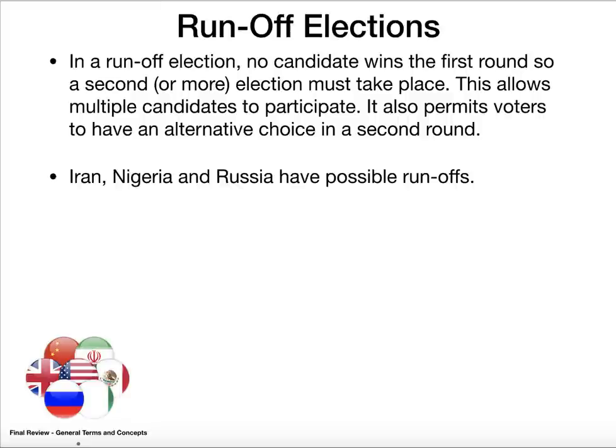A runoff election: some countries — Iran, Nigeria, and Russia — allow the president to be elected in a possible second round of voting. In Iran and Russia, if you do not receive 51% of the vote, there will be a second round. In Nigeria it's a bit trickier — you have to win 25% of the vote in two-thirds of the 36 states; if you don't get that, there's a second round, and that happens more often. What's nice about runoff elections is that voters get an alternative and can hopefully vote again if their first candidate didn't make it to the final two.